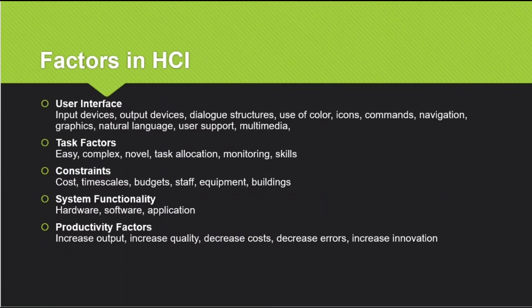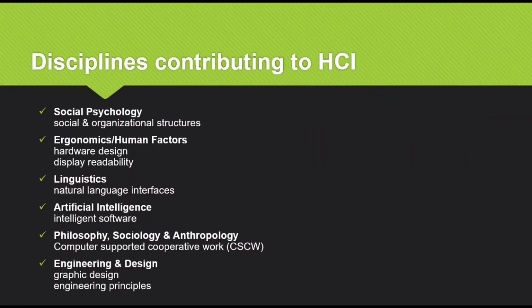Next, we have factors in HCI: user interface, input device, output device, dialogue structure, use of color, icons, commands, navigation, graphics, natural language, user support, multimedia, and task factors such as easy, complex, and novel tasks. Constraints include timescales, budget, staff, system functionality, and hardware and software considerations.